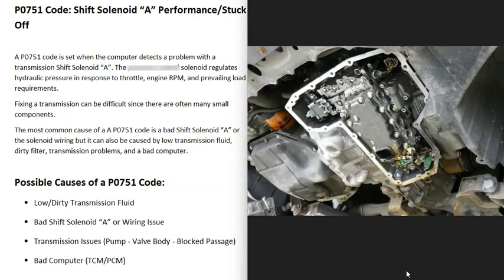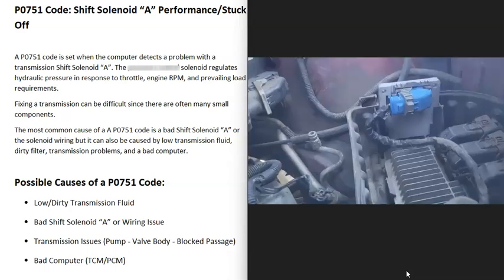The next possible cause is that the transmission itself is having some kind of issue stopping shift solenoid A from working. This could be something like a bad pump, a bad valve body, a blocked passage, or something blocking the flow of fluid. Basically, there might not be any problem with the solenoid itself, but something else is preventing it from working.